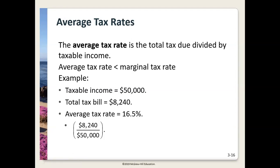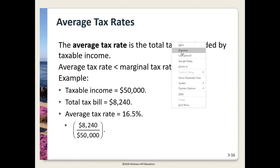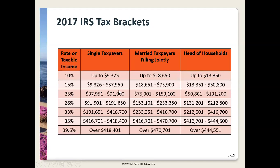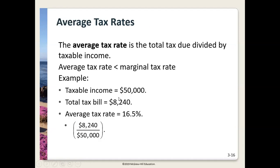People ask: my marginal tax bracket is 35%, but how much do I really pay on average? We determine that by taking total tax liability divided by taxable income. The average tax rate in this example is 16.5%. Even if your last dollar is taxed at 25%, since you also paid 10% then 15% on lower income portions, on average every dollar you earn is only taxed at about 16.5%.